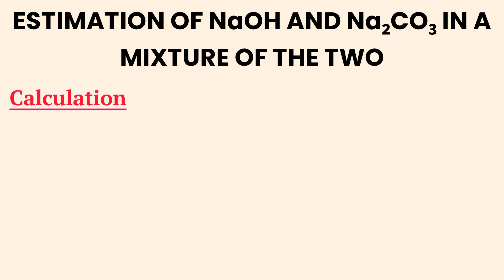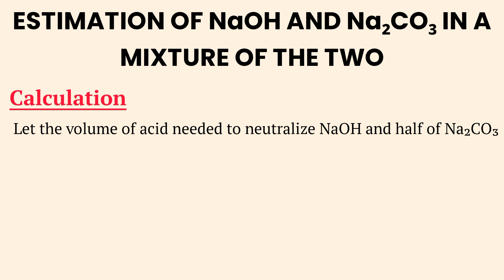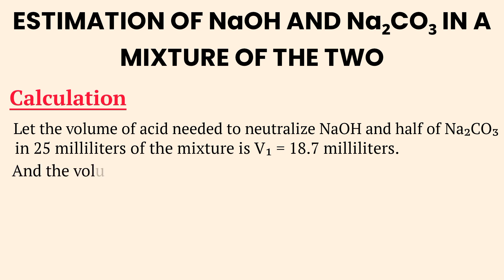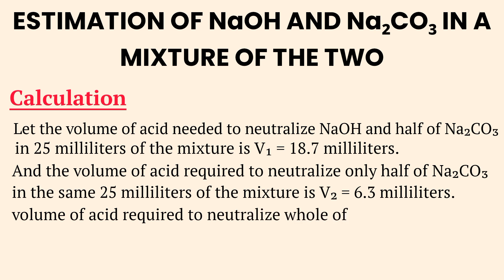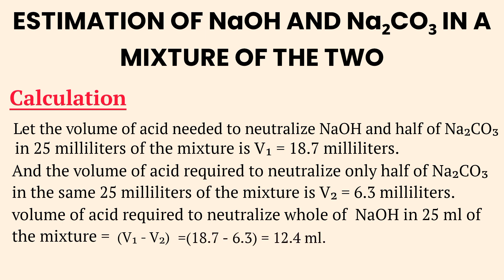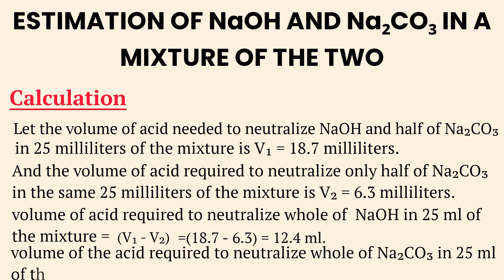Let's calculate the volume of acid required to neutralize the mixture of NaOH and Na2CO3. Let V1 = 18.7 mL, the volume of acid required to neutralize all NaOH and half of Na2CO3 in 25 mL of the mixture. And V2 = 6.3 mL, the volume required to neutralize the other half of Na2CO3. Volume of acid for whole NaOH = V1 − V2 = 18.7 − 6.3 = 12.4 mL. Volume of acid for whole Na2CO3 = 2 × V2 = 2 × 6.3 = 12.6 mL.